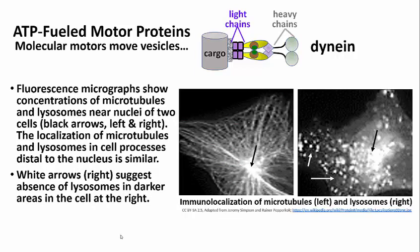Here we have fluorescent micrographs of two cells that have been immunostained to detect microtubules on the left, or lysosomes on the right, using fluorescent antibody preparations against microtubules and lysosomal proteins, respectively. The micrograph on the left shows microtubules spreading from a high or bright concentration near the nucleus, radiating outwards and into extended cell processes. Fluorescence from lysosomes is also concentrated near the nucleus and is separated into speckled bright spots further from the nucleus, again into cell processes.